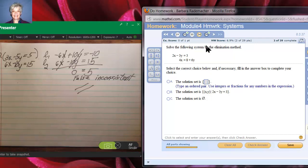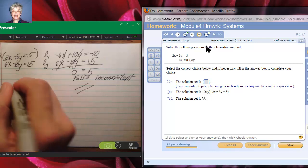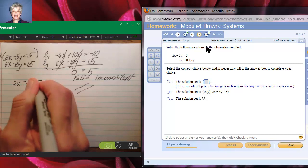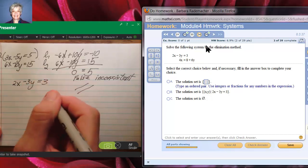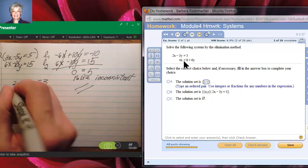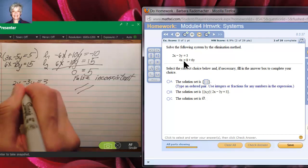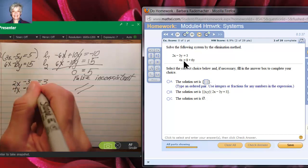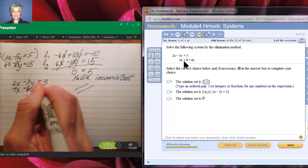Okay, let's try this. We're told to use elimination. We're going to have 2x minus 3y equals 3. And this one is not in standard form. I need to put it in standard form. That'll be 4x minus 6y equals 8.